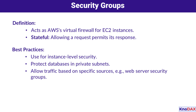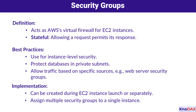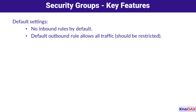Security groups are typically used to secure resources at the instance level. For example, web servers in a public subnet need to accept traffic from the internet, but database servers in a private subnet should only accept traffic from specific sources like your web server. You can create or assign security groups during instance setup or modify them later for fine-tuned control — it's all about flexibility.